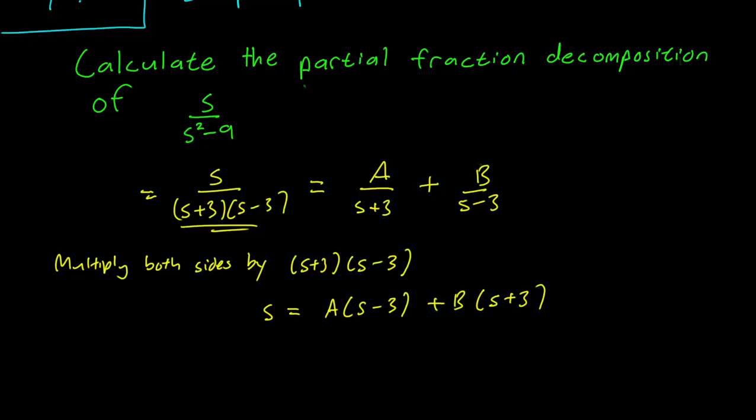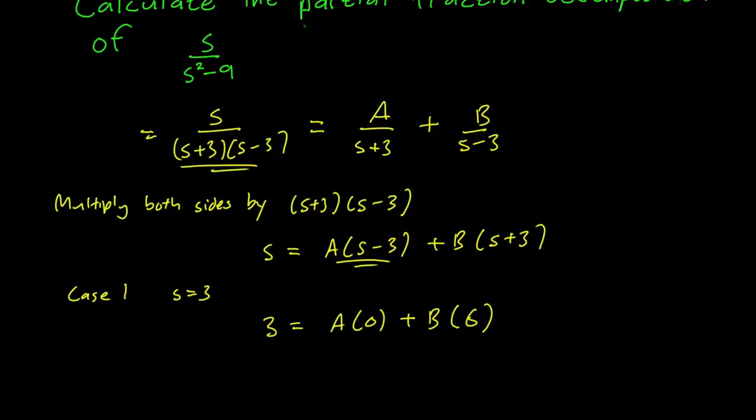And our goal is to eliminate each of the a and b in turn. So our first case is s equals positive 3. And the reason we want that case is that this makes the s minus 3 term next to the a equal to 0. So we have 3 equals a times 0, and that's why we chose s equals 3, plus b times 6. And this leaves us with b equals 1 half.